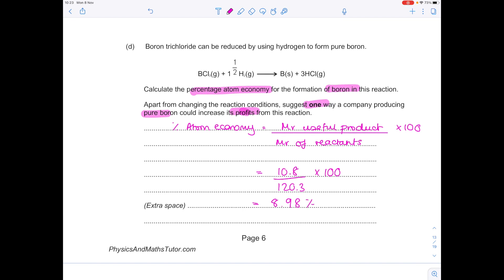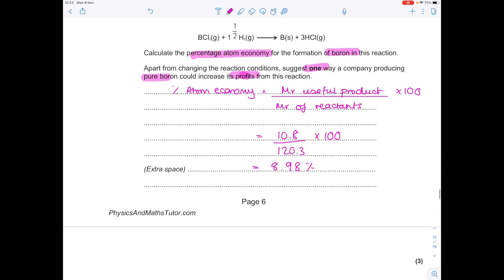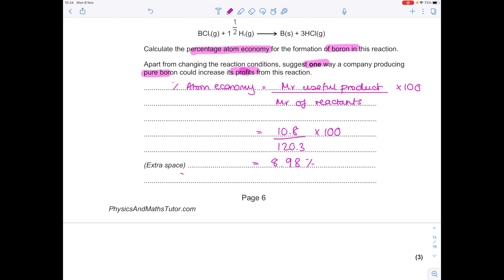Make sure we finish answering this question by understanding how we can increase the profits. Let's look at the other byproduct, hydrochloric acid. That's an extremely useful product, so that could be sold also for money.